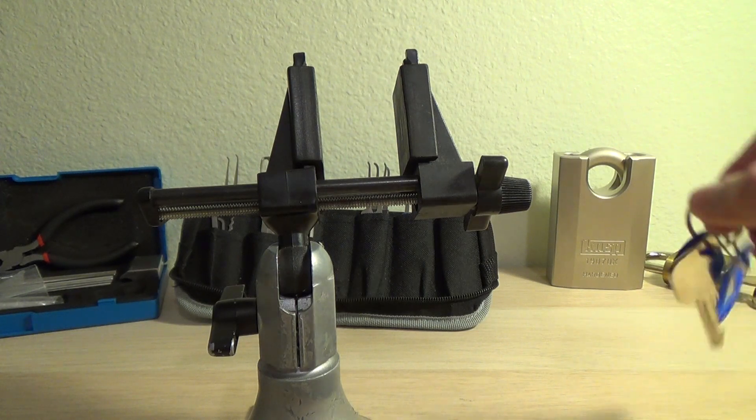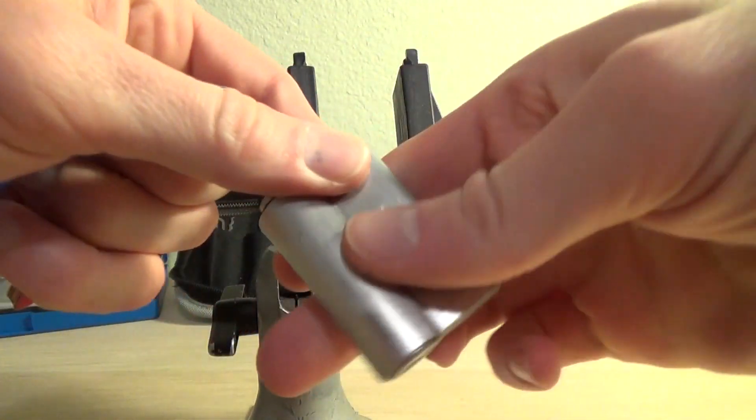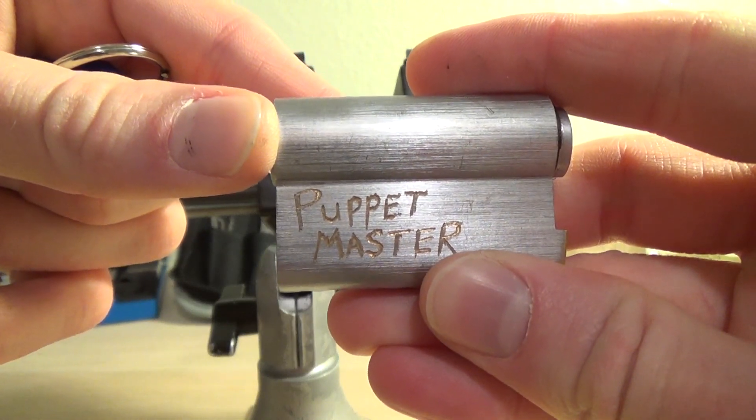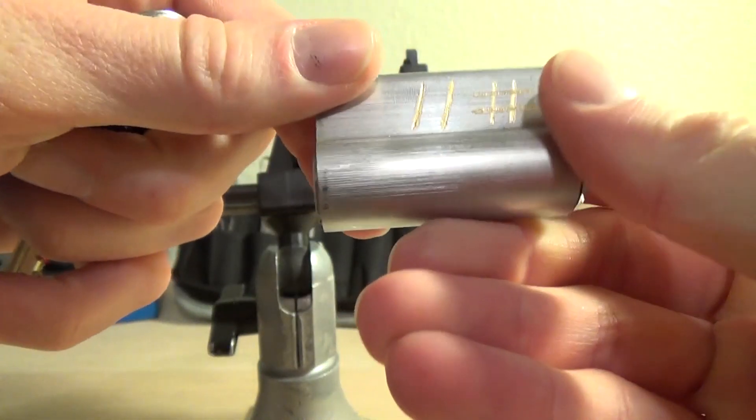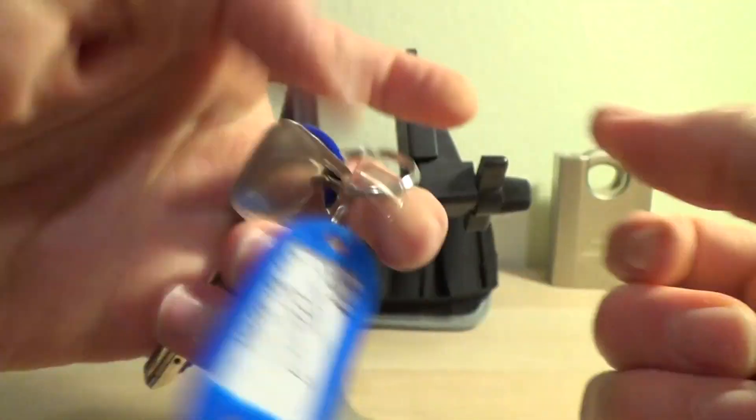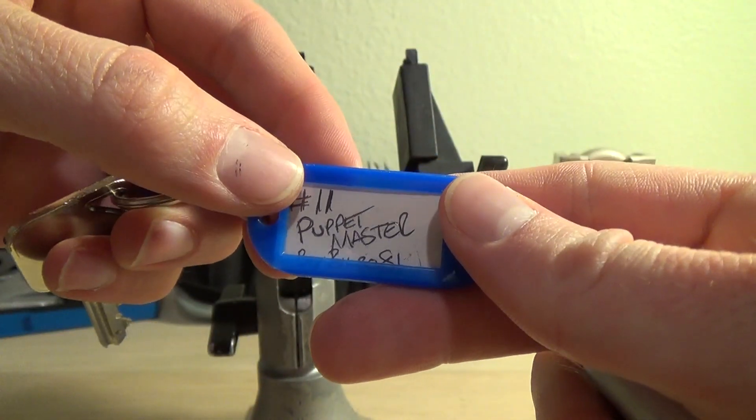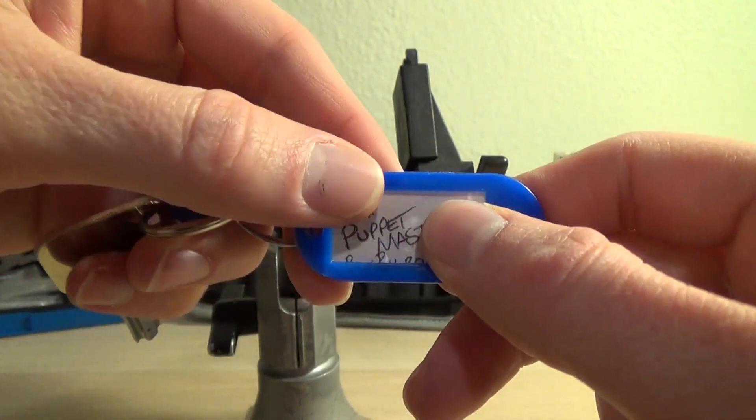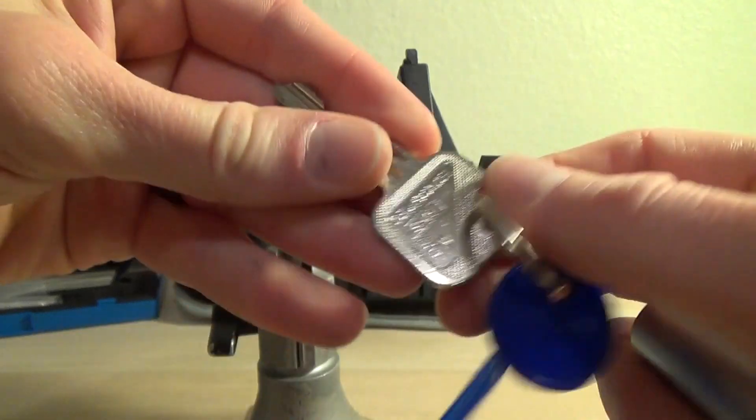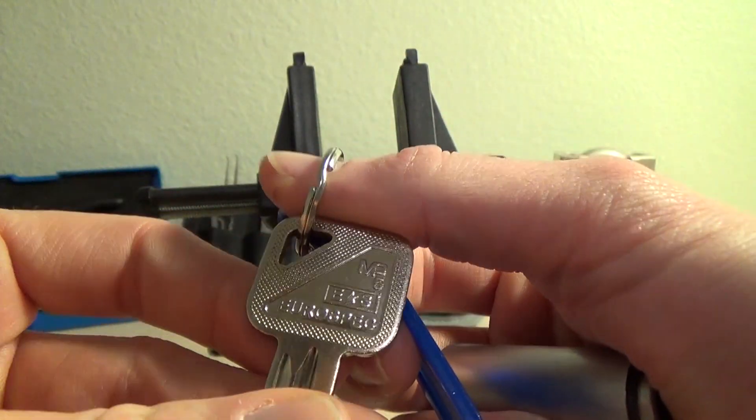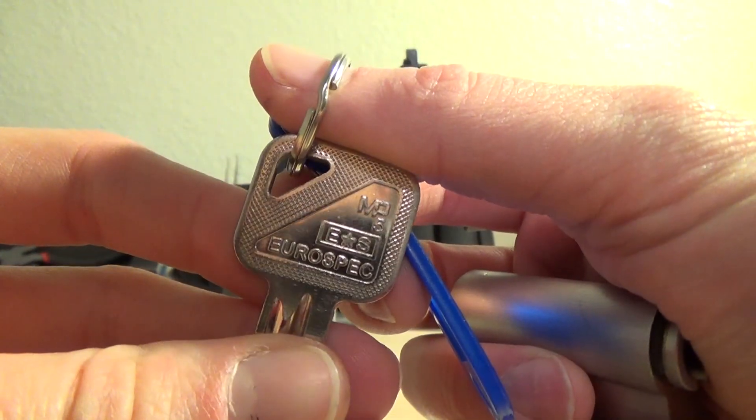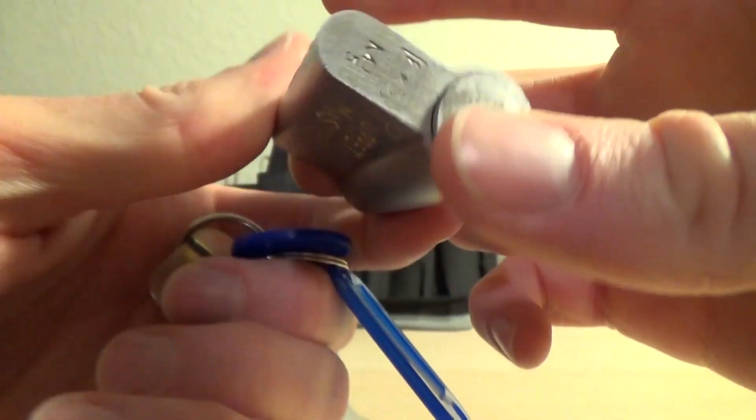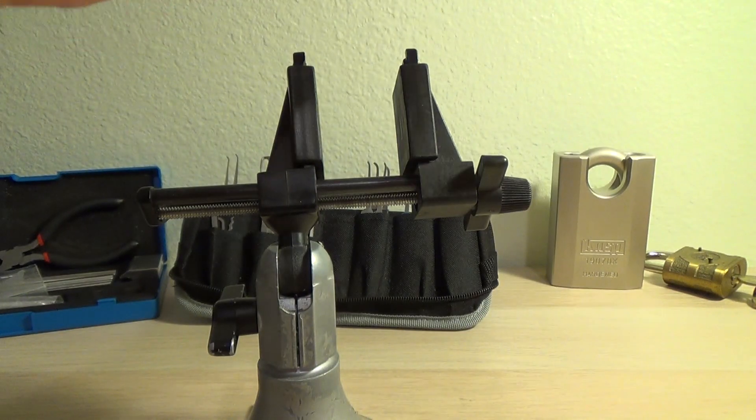Alright guys, challenge lock for you. It's called Puppet Master and it's the 11th lock from BoyandMilbo81, if I could say his name, excuse me about that. It's on a Euro spec cylinder, I'm not sure that's the brand or what, but anyway let's put it up in the vice and see what's inside.